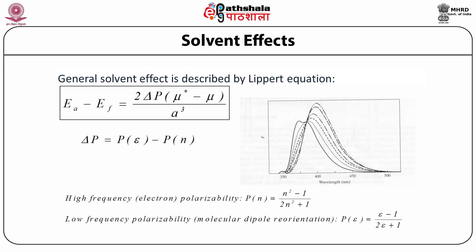The general solvent effect is described by the Lippert equation: Eₐ minus E_f equals 2ΔP(μ_e minus μ₀ minus μ) divided by A³, where ΔP equals P_e minus P_n. High-frequency electron polarizability is given as P_n = (n² − 1)/(2n² + 1), and low-frequency polarizability from molecular dipole orientation is P_e = (ε − 1)/(2ε + 1).